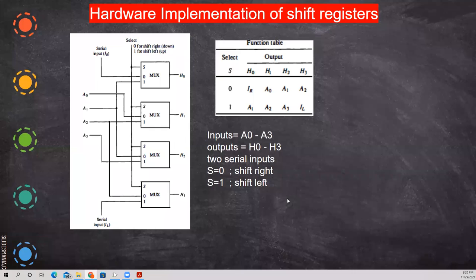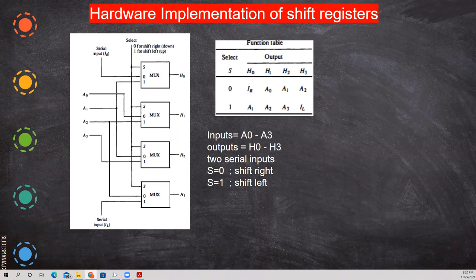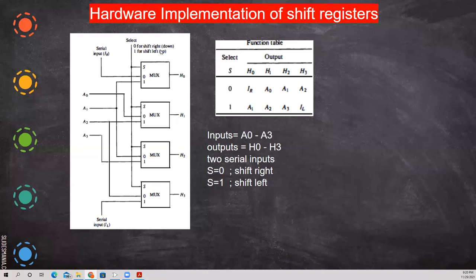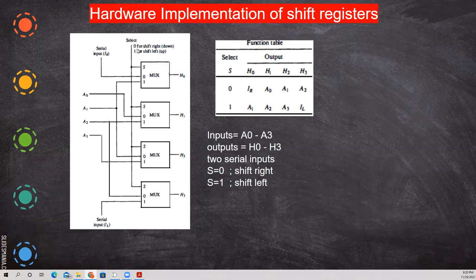So in this we will be seeing the hardware implementation of shift registers. Here we have the multiplexer, one by one, that is a select line. We have two inputs, one select line and two inputs. So if it is zero, select line is zero, it acts as a shift right. The data is all shifted right one time.